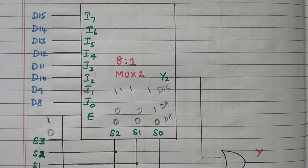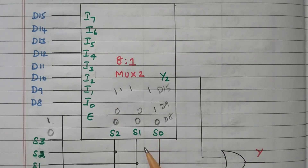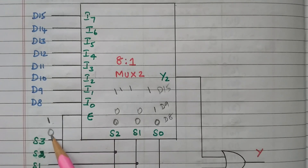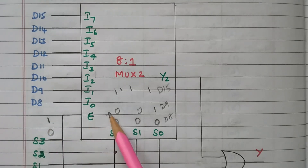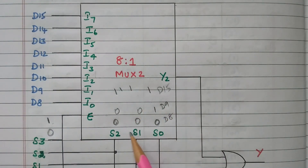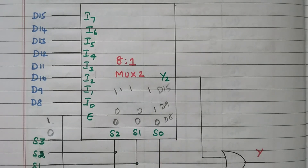In this video we discussed how to design a 16-to-1 multiplexer using two 8-to-1 multiplexers. The 16-to-1 MUX has 4 selection lines and the 8-to-1 MUX has 3 selection lines; out of the 4, three are connected in parallel and one (MSB) enables the MUX. If S3 is 0, MUX1 is enabled and transfers data D0 to D7; if S3 is 1, MUX2 is enabled and transfers data D8 to D15. Subscribe to the channel for more videos. Thank you for listening.